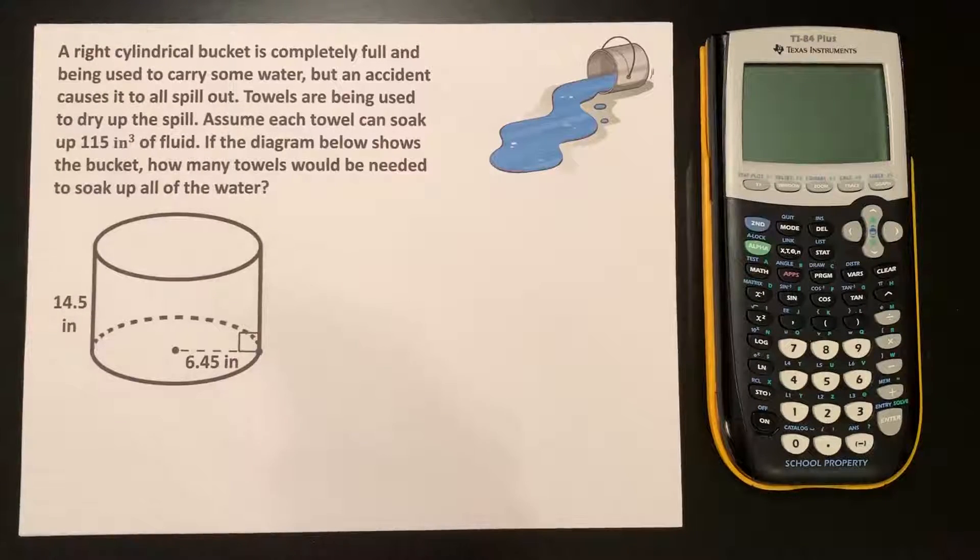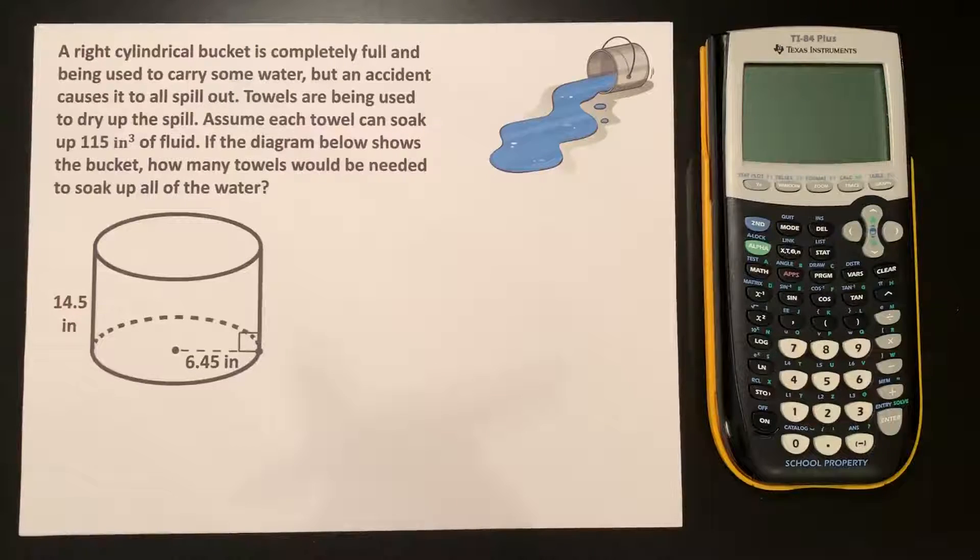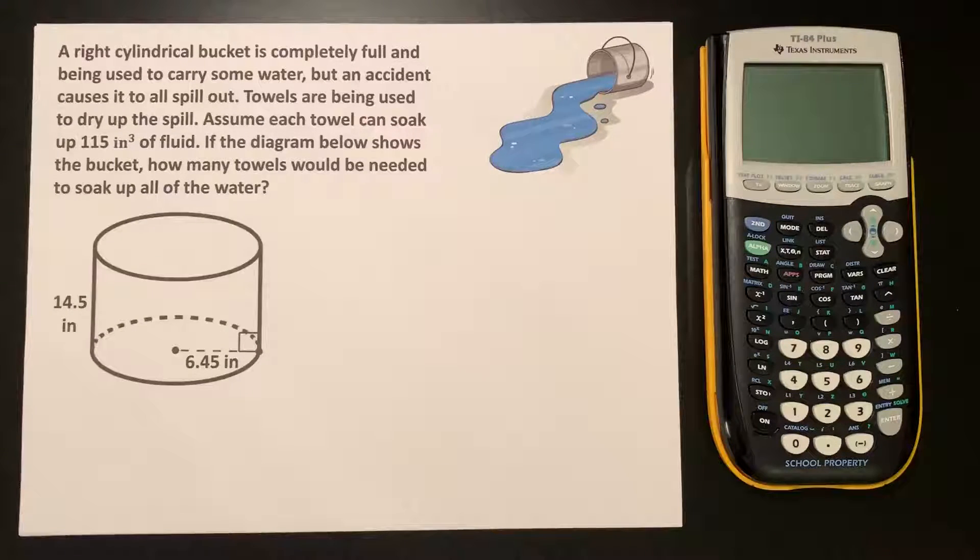A right cylindrical bucket is completely full and being used to carry some water, but an accident causes it to all spill out. Towels are being used to dry up the spill. Assume each towel can soak up 115 cubic inches of fluid. If the diagram below shows the bucket, how many towels would be needed to soak up all of the water?